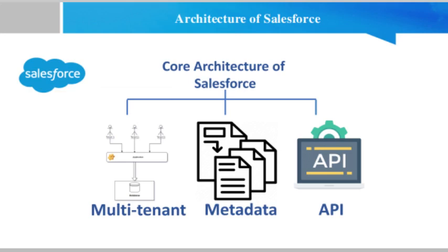The core architecture of Salesforce can be understood as a series of layers, where each layer has different features and functionality. The core architecture of Salesforce is based on three layers: Multi-Tenant, Metadata, and API. We shall discuss each of these in detail one by one.